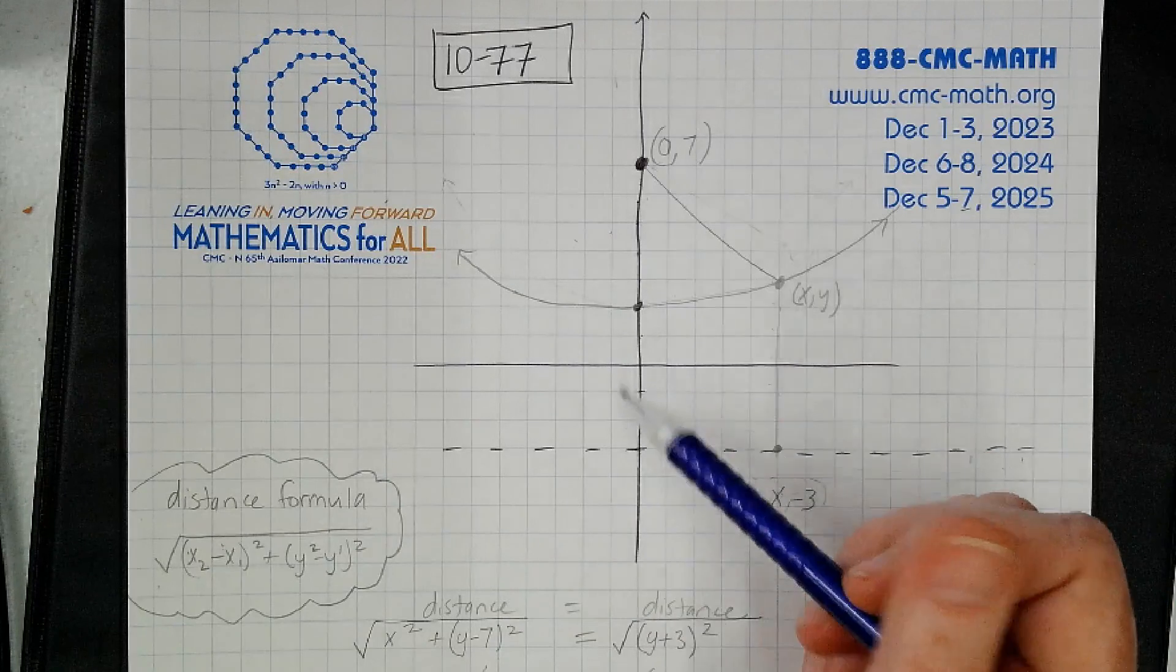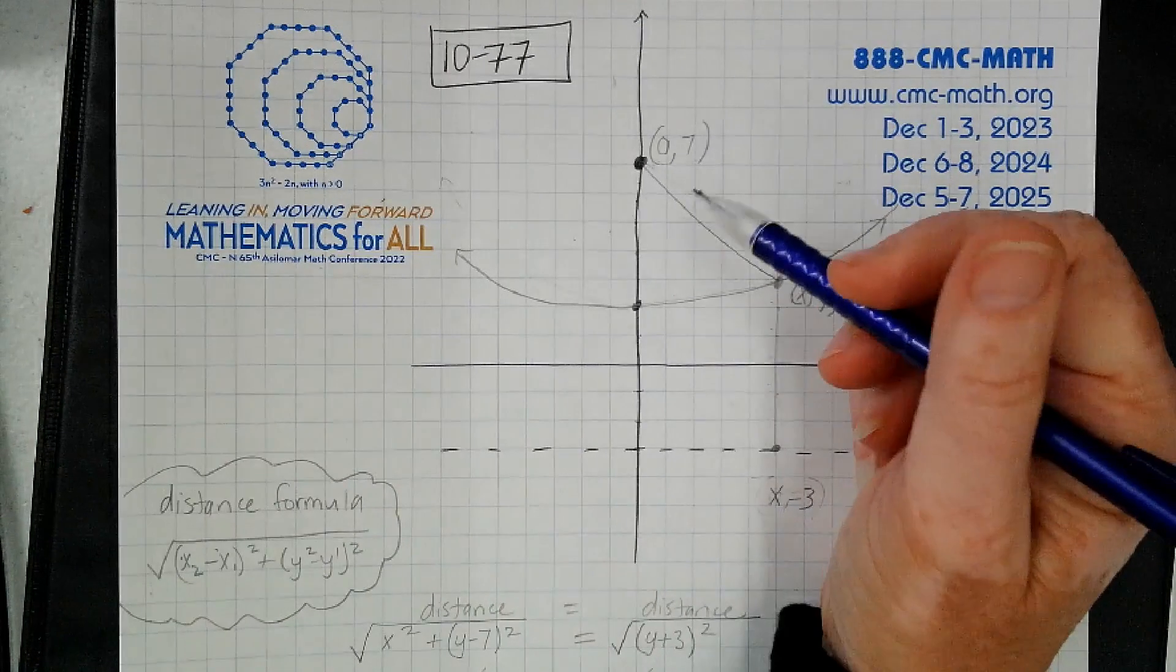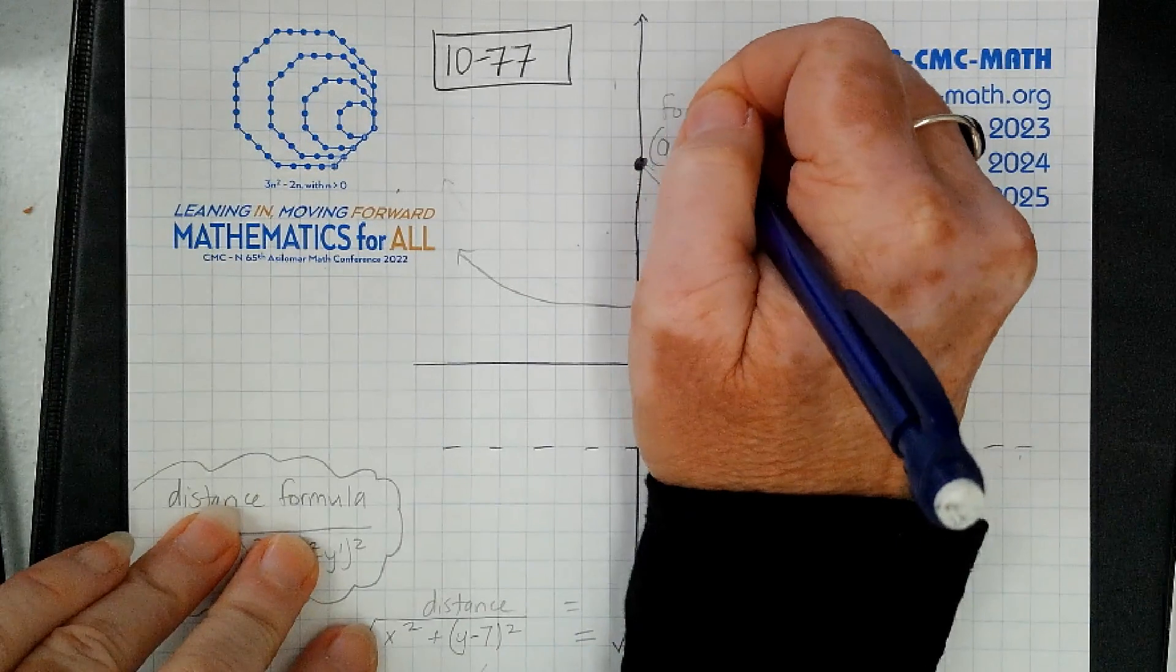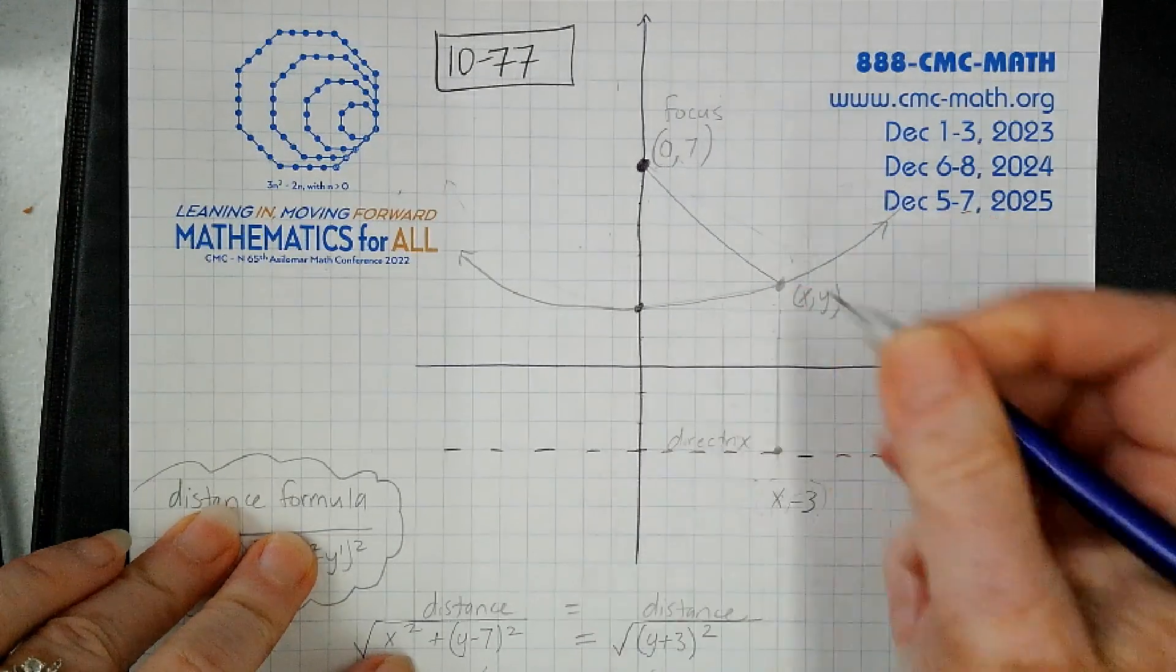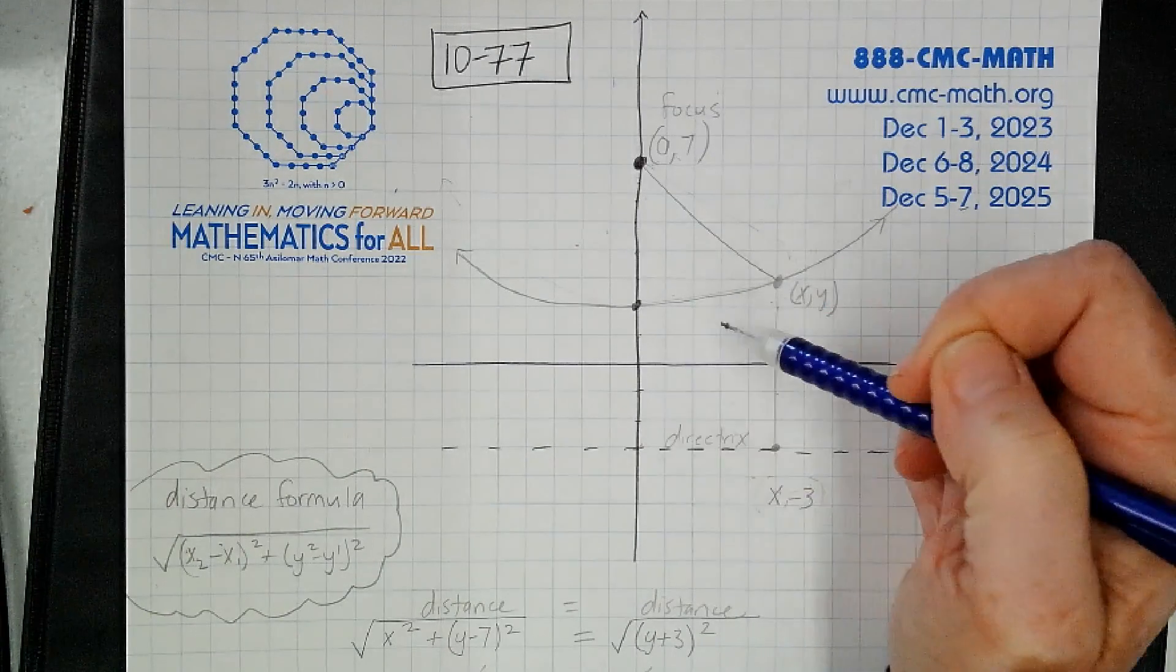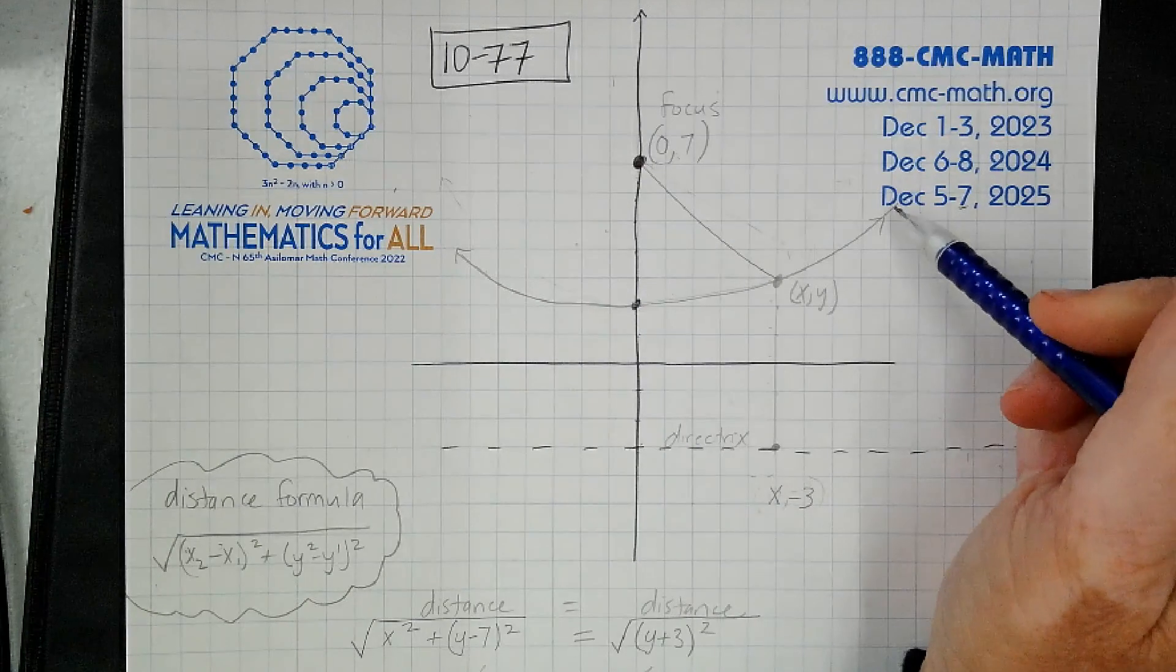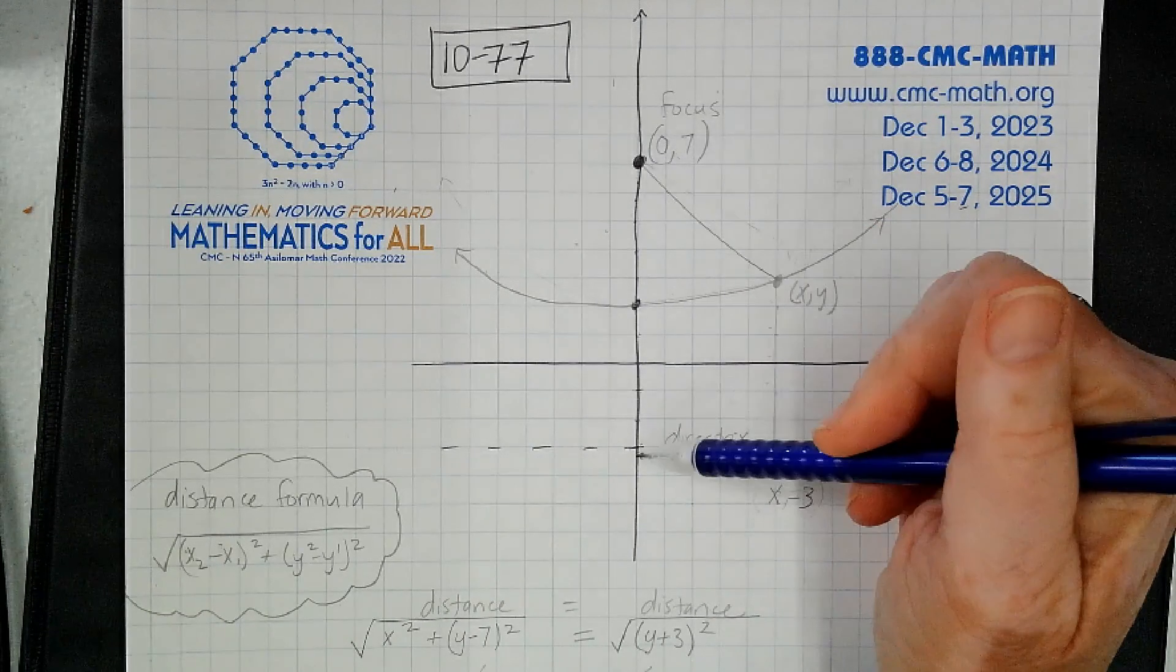That might make sense by the definition of a parabola. It's the set of all points that are equidistant from the focus and the directrix. See, this is five from here to here's five, and from here to here's five. It's harder to understand that if you take any point.